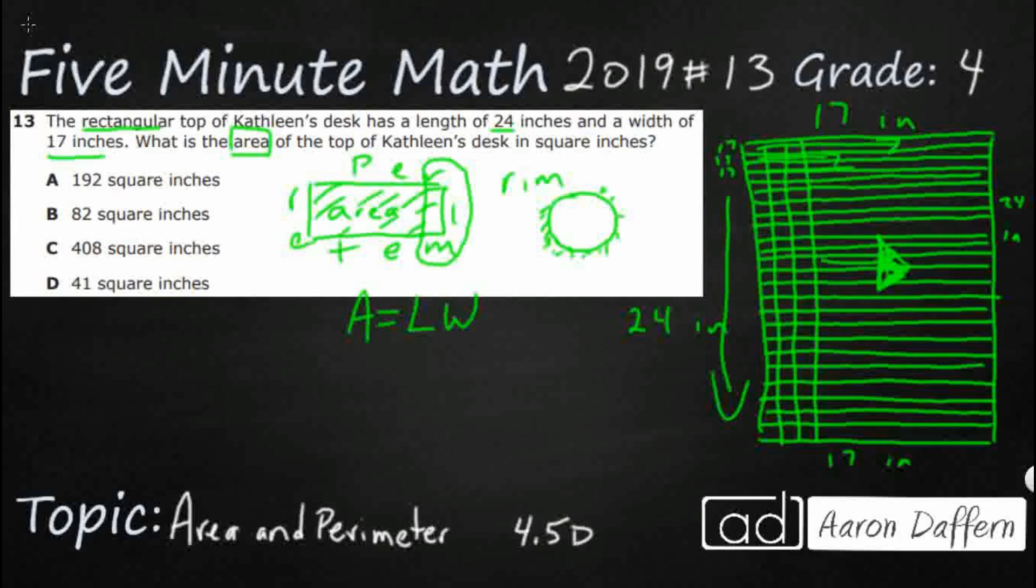Instead of drawing all the columns and rows in 4th grade, what we learn is you could just multiply the length times width. They give us both of those, so that's all it is. It is two digit by two digit multiplication, something else we learn in 4th grade.